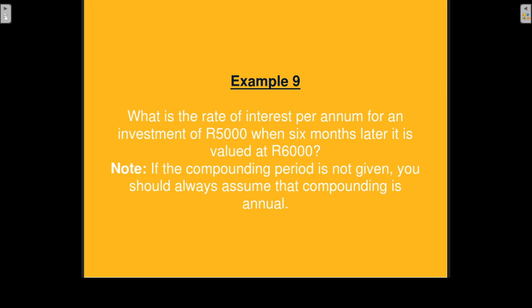Example 9 is a repetition of example 5 from simple interest. What is the rate of interest per annum for an investment of 5,000 rands when six months later it is valued at 6,000 rands? Note: if the compounding period is not given, you can assume that the compounding is annually.